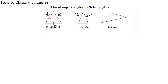The last type of triangle you can classify by side lengths is a scalene triangle. With a scalene triangle, none of the lengths of that triangle are congruent. As you can see here on the scalene triangle, there are no congruent tick marks anywhere, meaning that none of these legs are actually the same length.